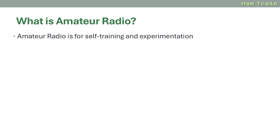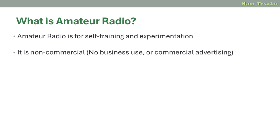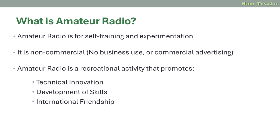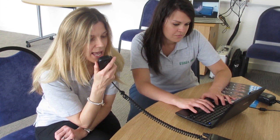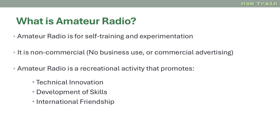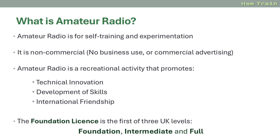Amateur radio is for self-training and experimentation. It is for non-commercial use — that means you can't run a business over amateur radio and there's no advertising. Amateur radio is a recreational activity that promotes technical innovation, development of radio skills, and international friendship. In the UK there are three licence levels: Foundation is the first, followed by Intermediate and then Full.